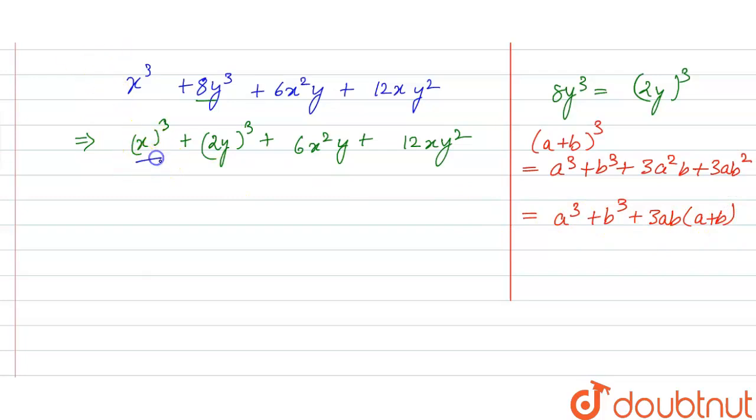So here the terms of a cube and b cube are present. So we have to make the term of 3ab into a plus b.